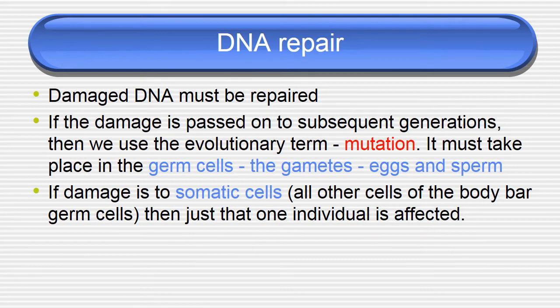Coming to DNA repair: repair is a simple process in definition but not in true sense — it is damaged DNA being repaired. If the damage is passed on to subsequent generations, we use the evolutionary term mutation, meaning permanent damage is mutation at the genetic level. It must take place in the germ cell — the gametes, egg and sperm. If damage is to somatic cells — all other cells of the body except germ cells — then just that one individual is affected and it won't be hereditary.